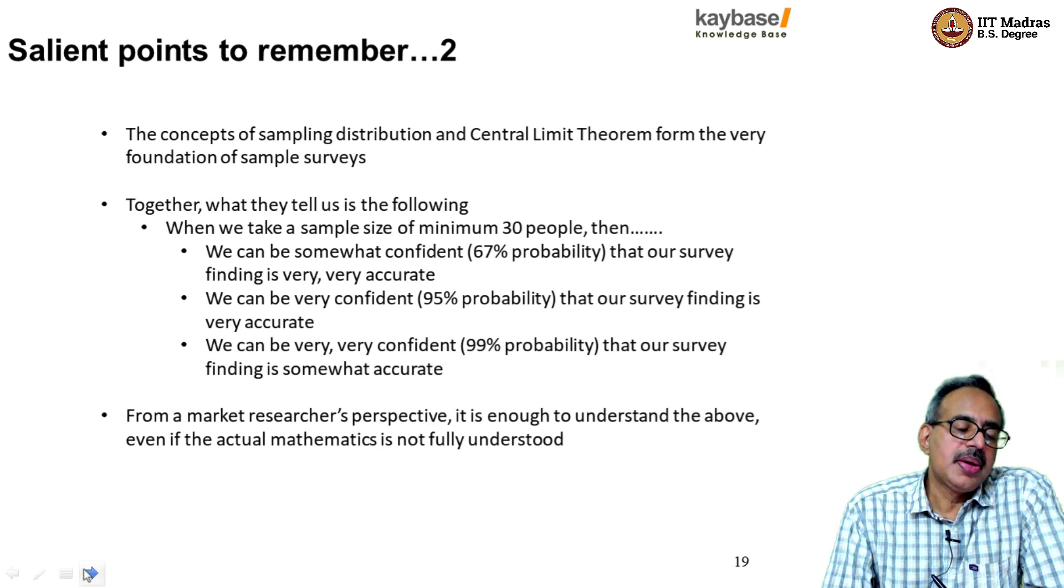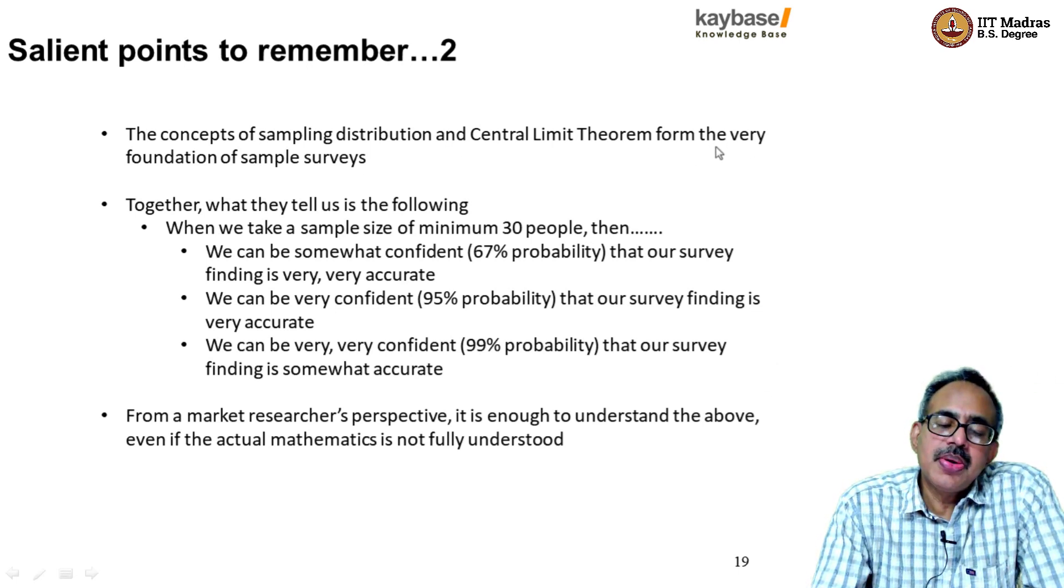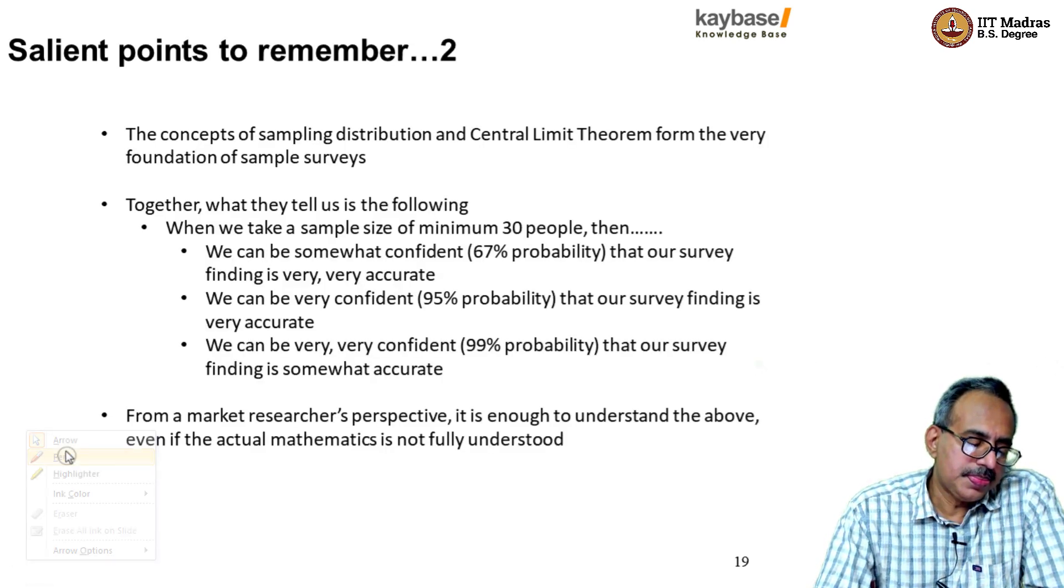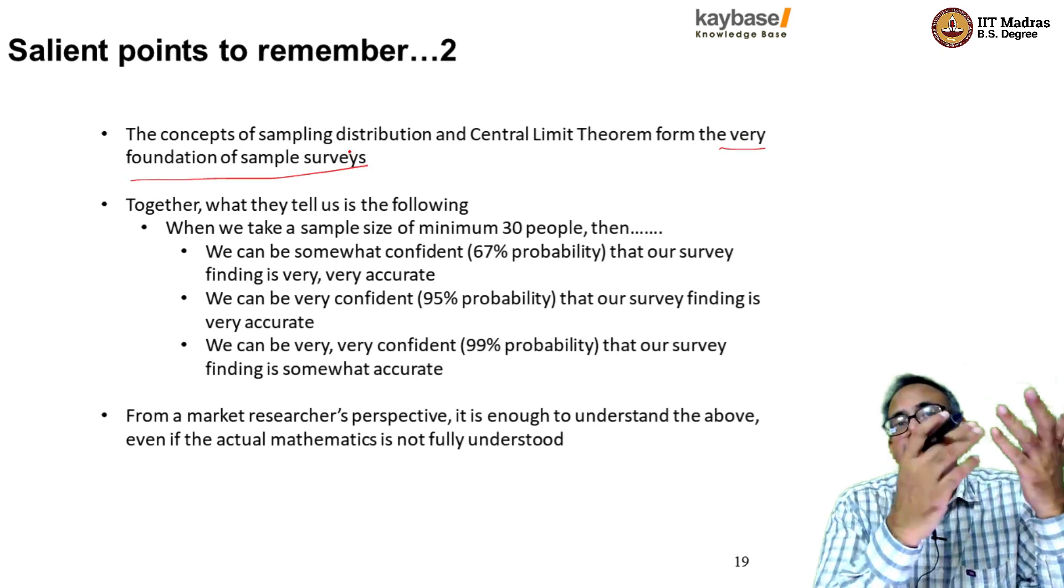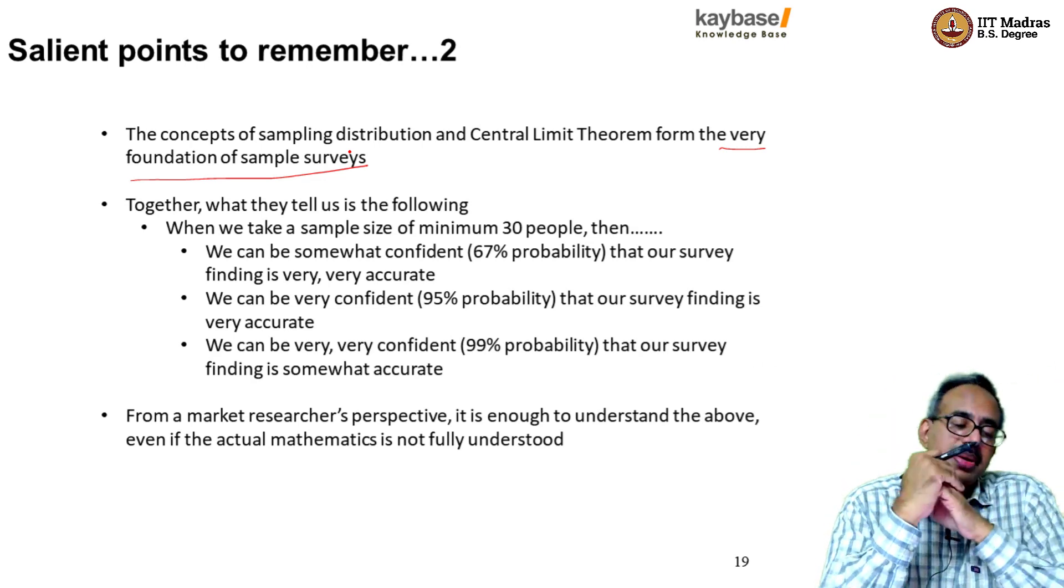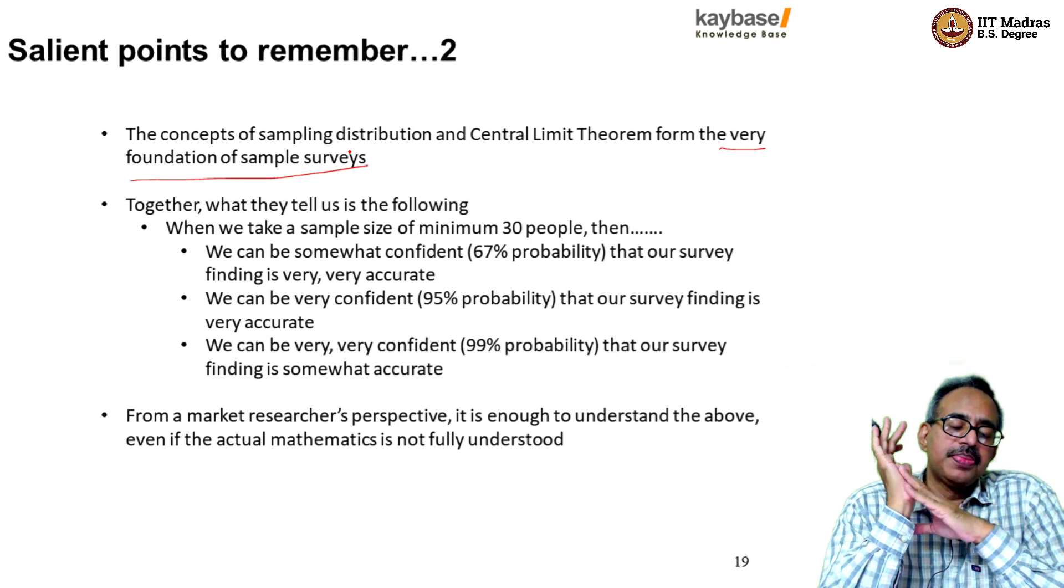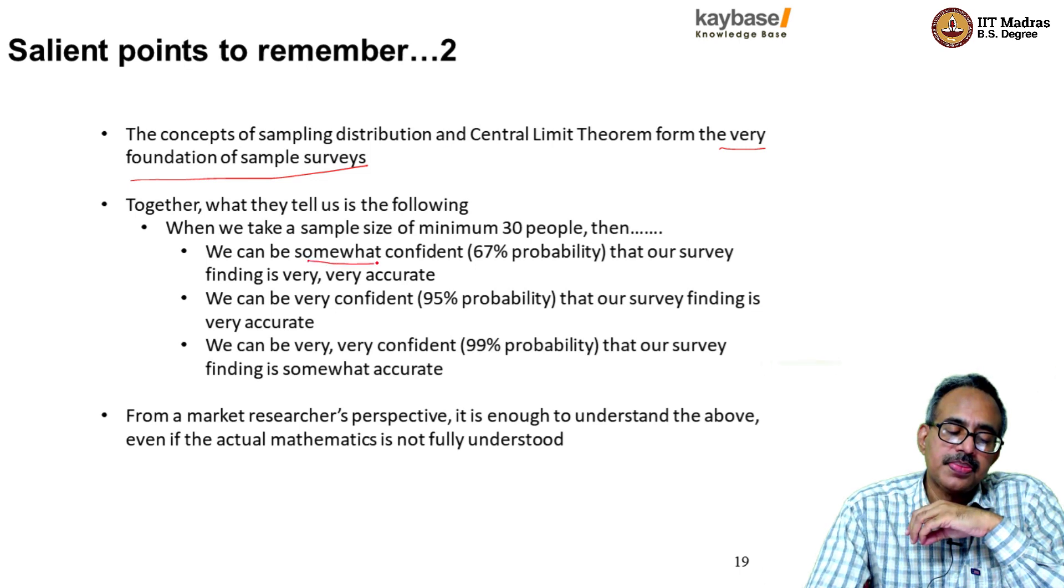So let's see the other set of salient points to remember. The concept of sampling distribution and Central Limit Theorem form the very core, the absolute foundation of all sample surveys. Because they tell us that a sample survey is likely to be accurate, and they also give us a formula for calculating how likely we are to be accurate. So together, what the sampling distribution and Central Limit Theorem tell us is that when we take a sample size of minimum 30 people, then we can be somewhat confident that our survey is very, very accurate.